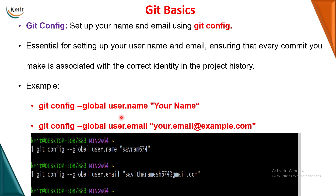You can give two details about yourself: the username and your email ID. To do that, type git config --global user.name and in double quotes give your name. The same for your email ID: user.email and in double quotes give your email ID, as shown in the example.